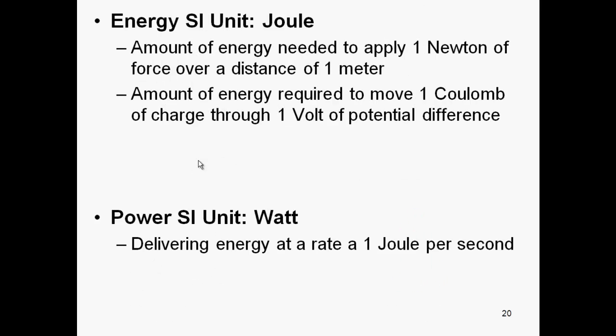The SI units for these two measurements: energy's SI unit is the joule, defined as the amount of energy needed to apply one newton of force over a distance of one meter, or alternatively the amount of energy required to move one coulomb of charge through one volt of potential difference. The SI unit for power is the watt, where one watt equals delivering or converting energy at a rate of one joule per second. Power can also be expressed in other ways — for example, kilowatt hours of electricity per day is a measure of power, since it's energy over a unit of time.